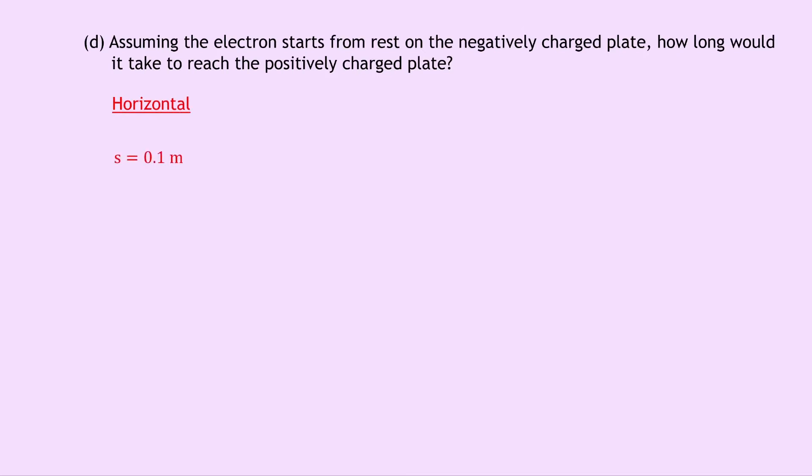So we know that S, the displacement, is the distance between the plates, which is 0.1 meters. We know that the initial speed is 0 meters per second because it starts from rest. We don't know what the final speed is. We now know the acceleration from part C, which is 8.8 times 10 to the 15 meters per second squared. And lastly, the time is what we're trying to find. So I'll put a wee star next to that one.